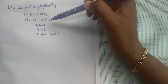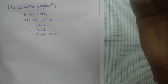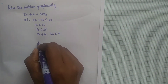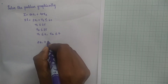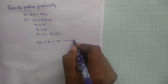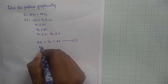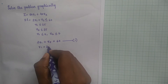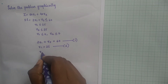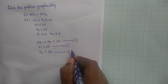First, we are reading the constraints as equations. The first constraint is 2x1 plus x2 less than or equal to 60, that is 2x1 plus x2 is equal to 60 — that is equation number 1. Then next, x1 is equal to 25, that is equation number 2. The third equation is x2 is equal to 35, that is equation number 3.